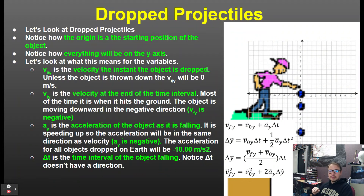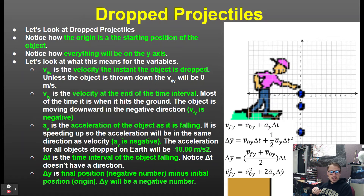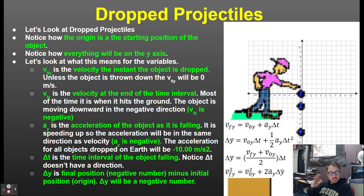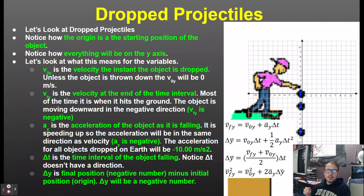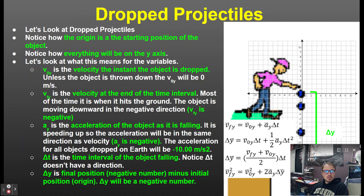Delta t is the time interval of the object falling — notice delta t does not have a direction, so it's the one variable in the kinematic equations that does not. Delta y is the final position minus the initial position — it's the displacement, and it will be a negative number because the final position is below the initial position. You have to keep track of all these signs or else you'll end up with the wrong sign or take the square root of a negative number.